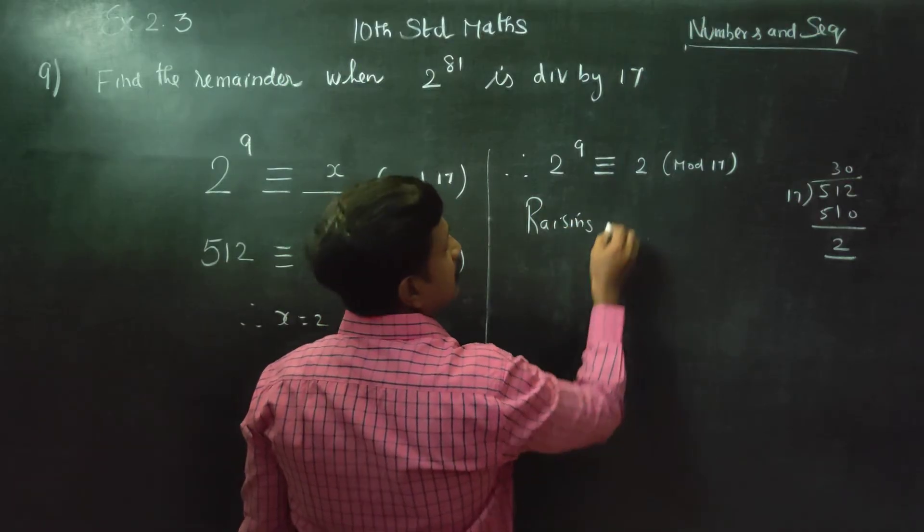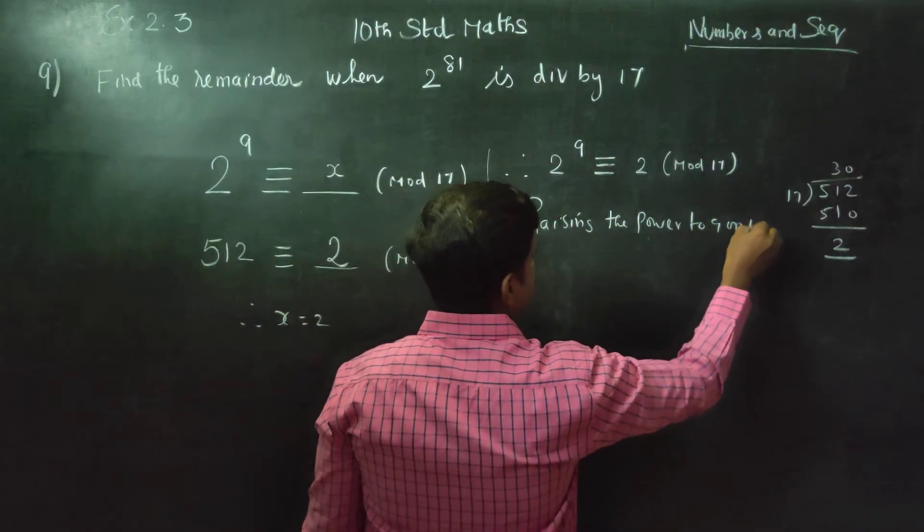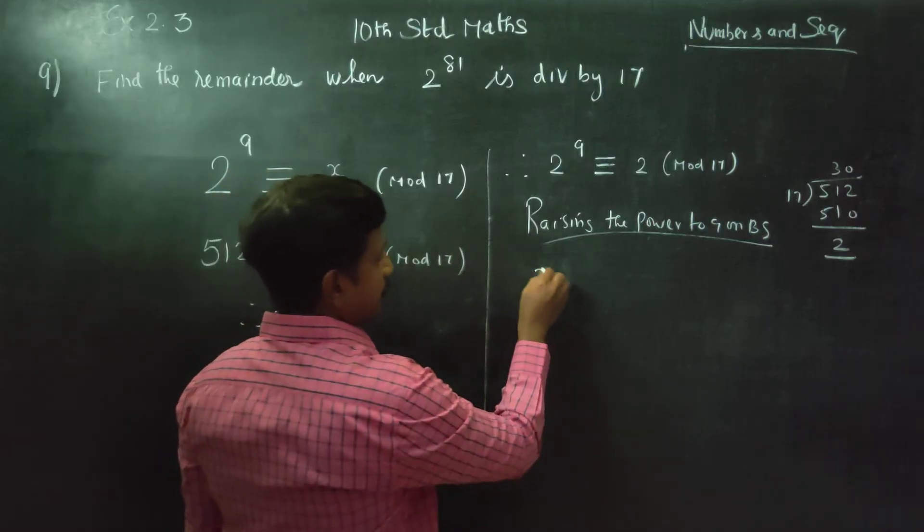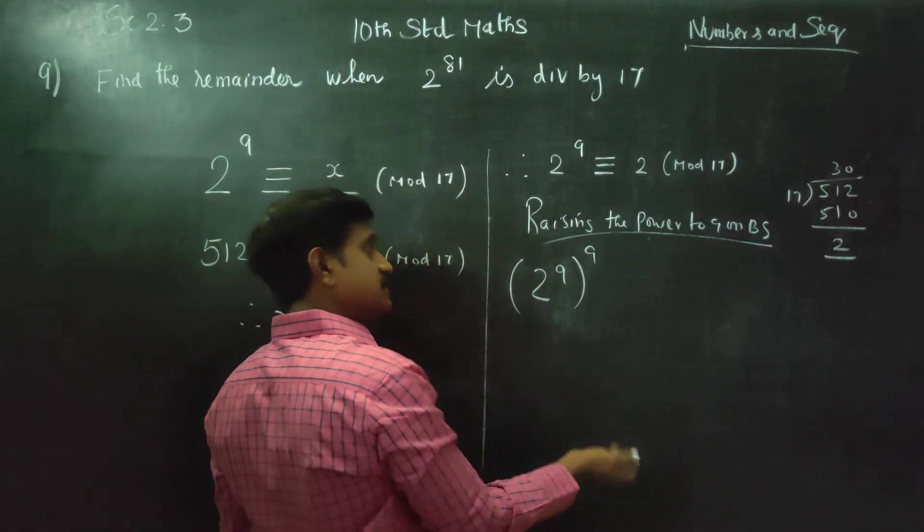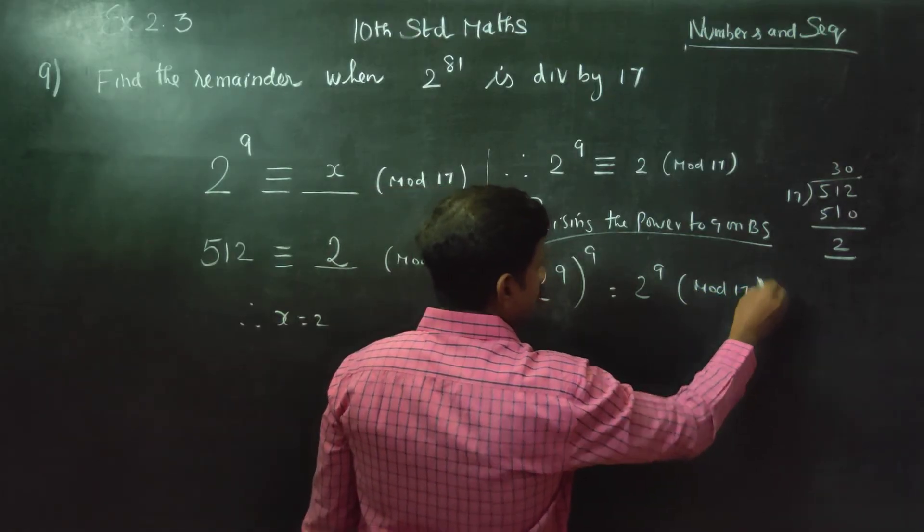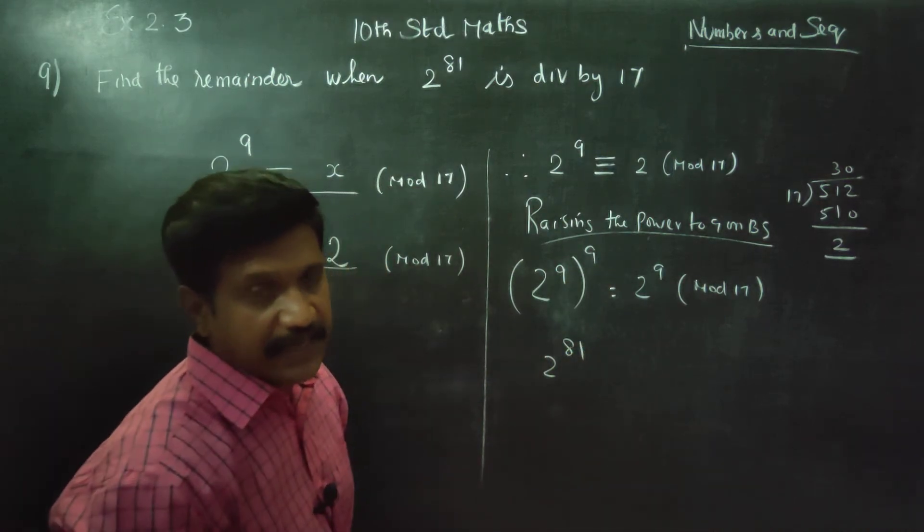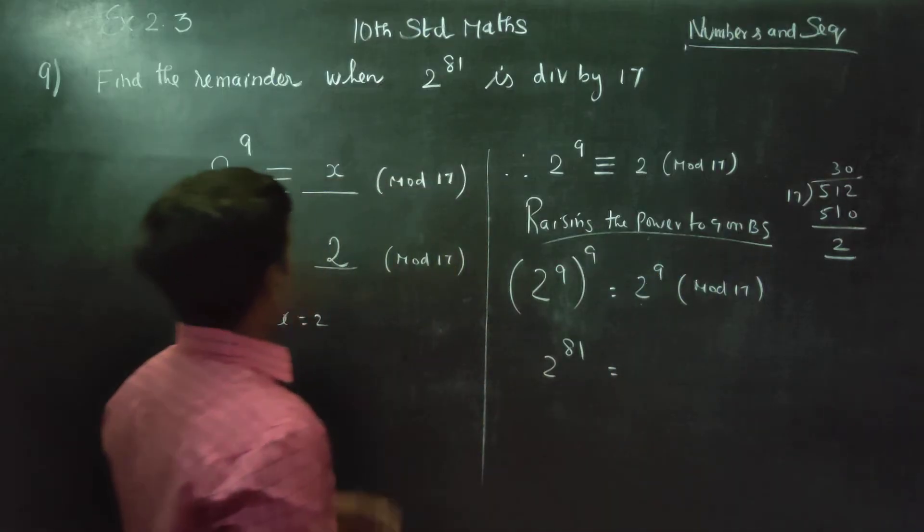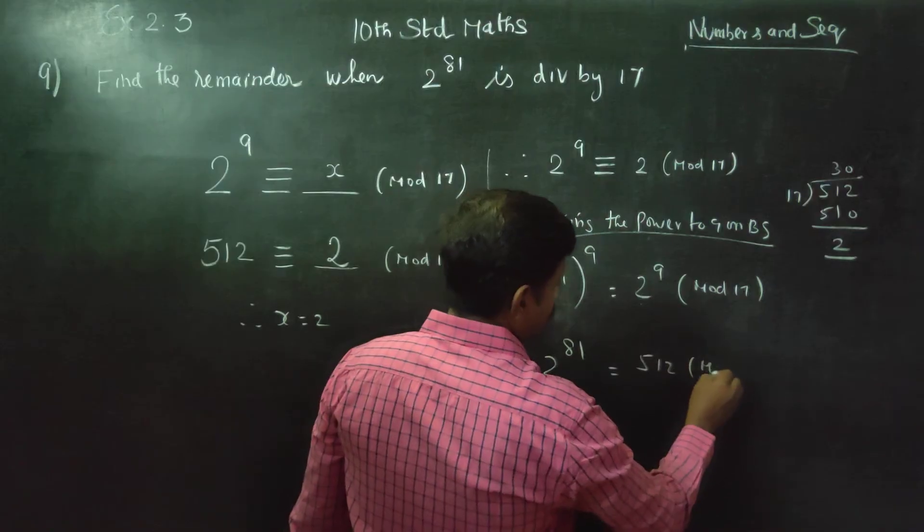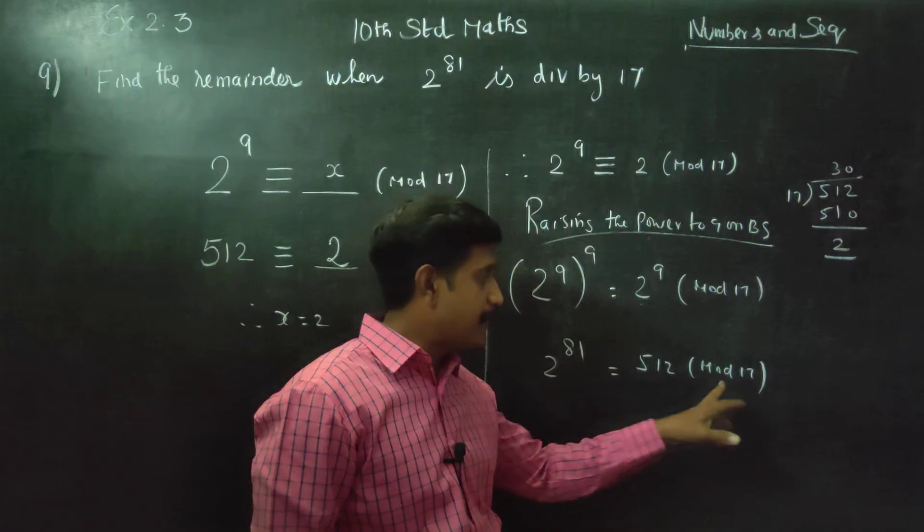Raising the power to 9 on both sides. Power 9 raised. 2 power 9 raised to power 9. 2 power 9 raised to power 9 equals 2 raised to power 9, mod 17. This is 512 mod 17.